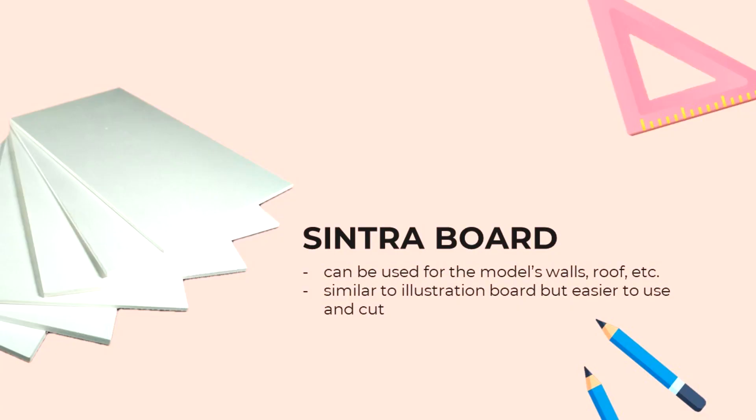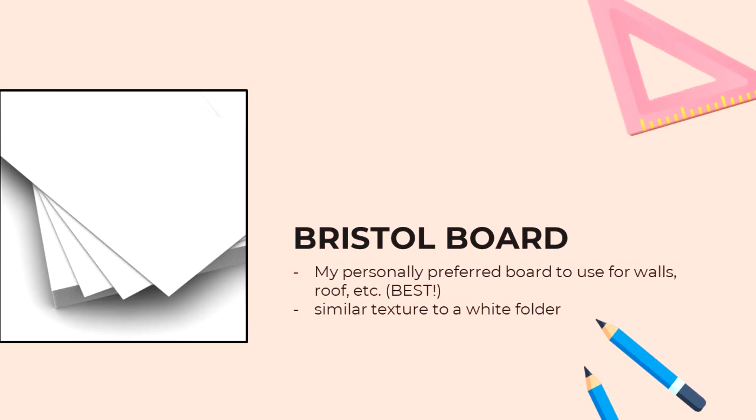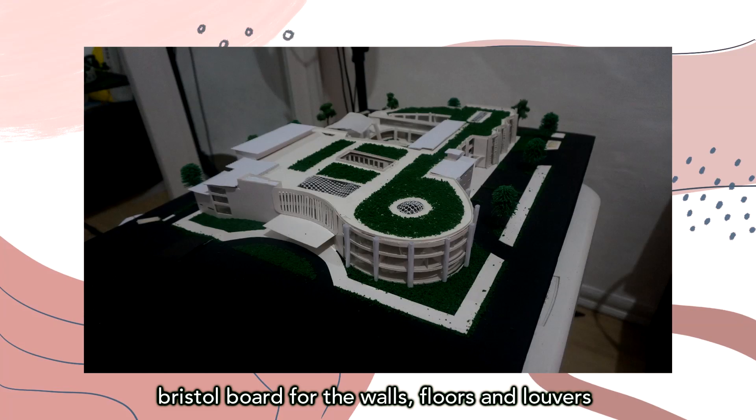Next we have Sintra board. Sintra board is like illustration board but it sucks less. A lot of people like using Sintra board for walls and roofs and all that stuff — good if you want to try it, it's a solid 7 out of 10. Then we have Bristol board. This is what I love to use when making sketch models — this is my holy grail. It's like a white folder but in board form, so it's very easy to cut, fold, or crease. It's so versatile, I find it the most workable. It's actually what I used for my whole thesis model, so I highly recommend it.